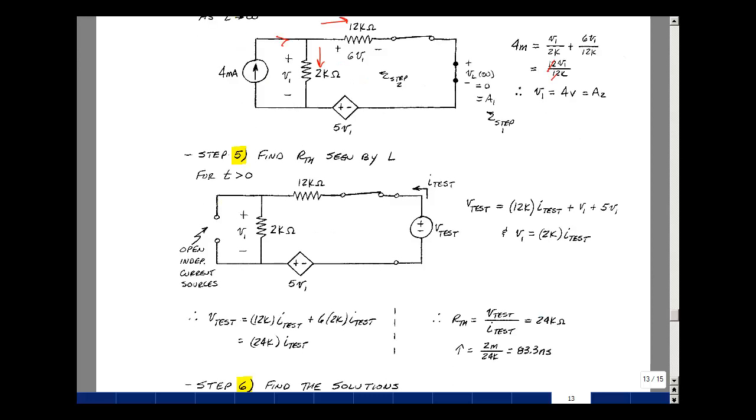Let's find the Thevenin resistance seen by the inductance with all the independent sources set equal to zero. So I have this controlled source here, and its value is 5 times this voltage. So I can't treat this like a resistor. So I need to apply a test voltage, measure a test current, or I could apply a test current and figure out the voltage. The ratio of these two would be the resistance looking back in.